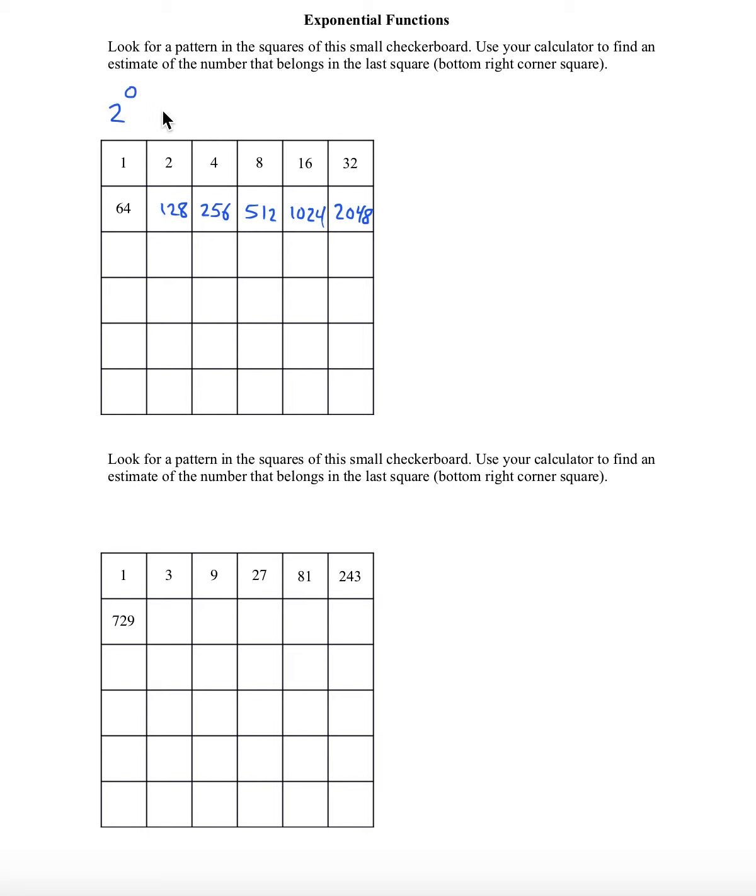The amount on the second square would be 2 to the 1. 2 to the 2 goes on the third square, 2 to the 3 for the fourth square, and so on. So what exponent goes in the final square? It's a 6 by 6 checkerboard, but keep in mind we did start with an exponent of 0 on the first square. So if we're going to fill in the 36th square, we actually need an exponent of 35.